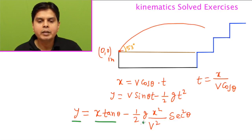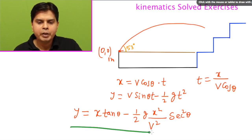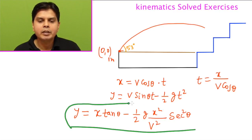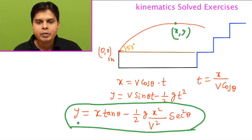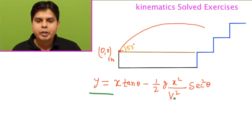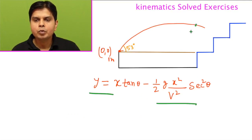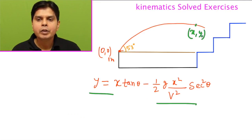If you substitute this, you'll get y equals x tan θ minus half g x squared by v squared sec squared θ. This equation is derived in all books and is called the equation of the trajectory of a parabola. That is, at any point on the trajectory, if I take an arbitrary point x and y, then that x and y will satisfy this equation: y equals x tan θ minus half g x squared by v squared sec squared θ, where v is the initial velocity and θ is the angle with horizontal with which the projectile is being thrown.